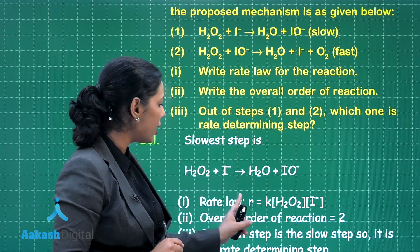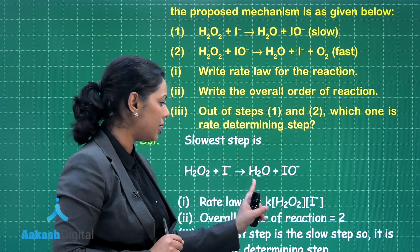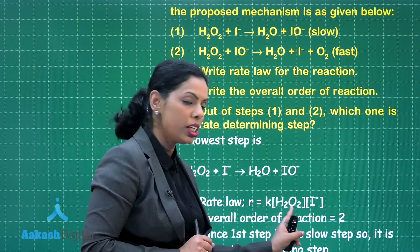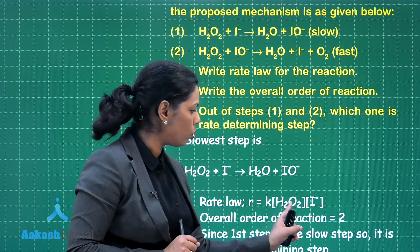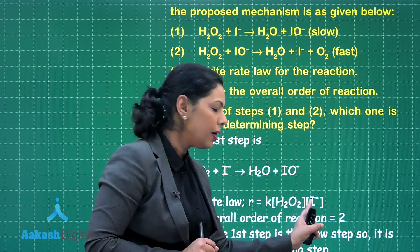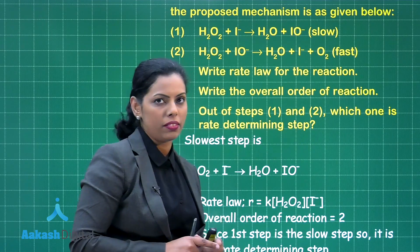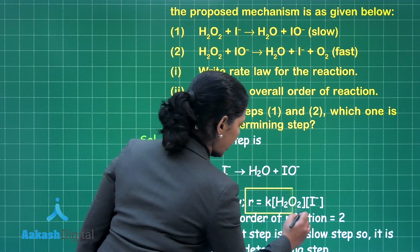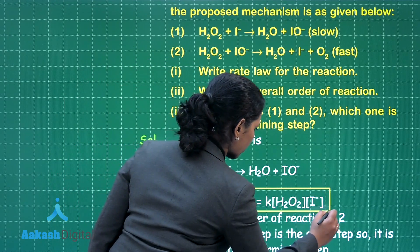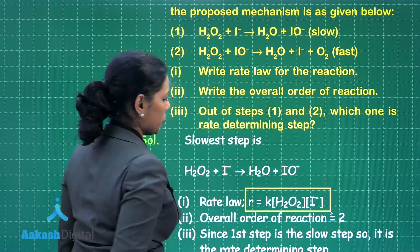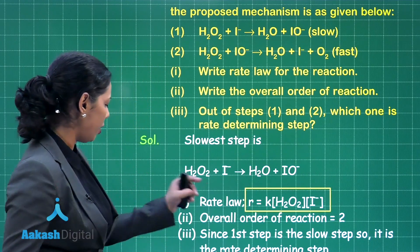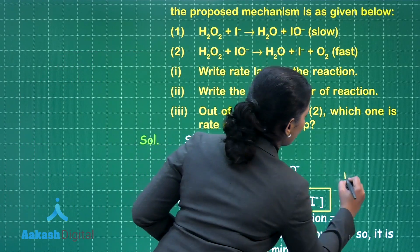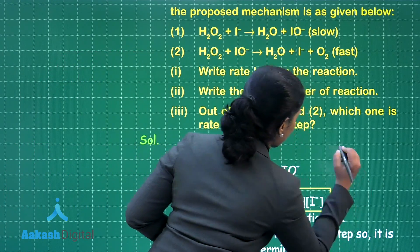Because the rate law represents the rate expression and that is dependent on the rate-determining step, which is the slowest step. So the rate law is: R is directly proportional to the concentration of H₂O₂ and I⁻ ion. You can represent this rate law in this manner, and for writing this you will get 1 mark.